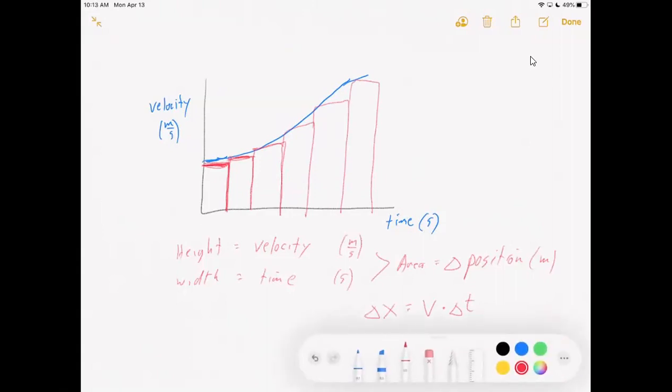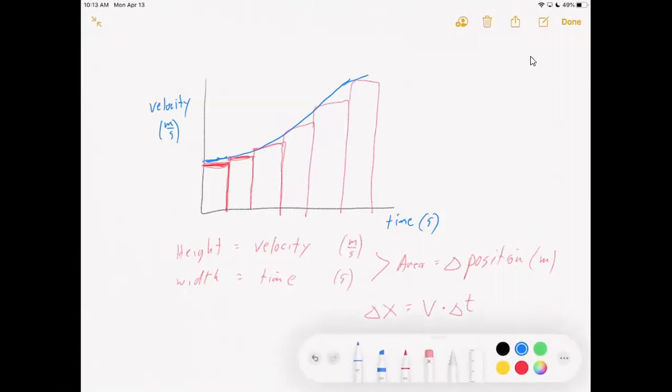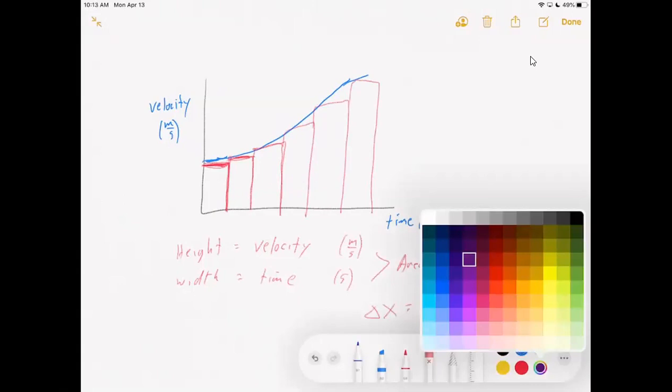So key ideas. Let me switch colors here to something interesting. This is a rate of change. Velocity is a rate of change of position. So if we know how fast the position is changing, we can compute the change, the total change in position from it.